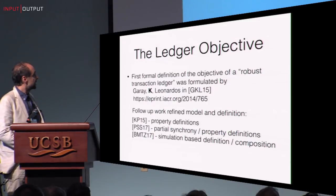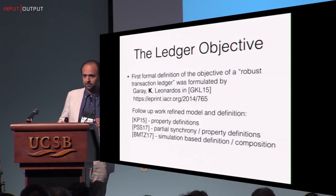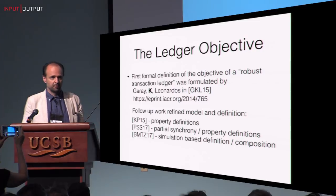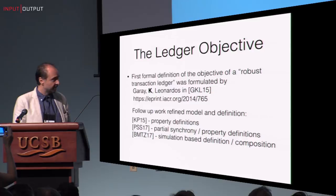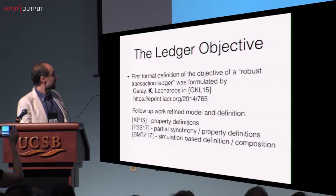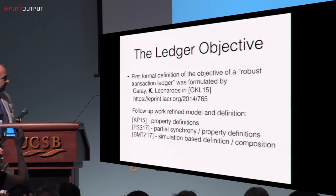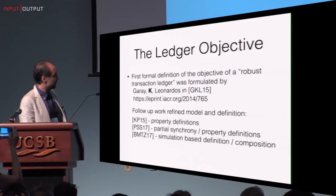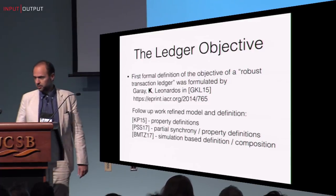You heard in this session a lot about the ledger objective. The goal is to construct a protocol that realizes this robust transaction ledger. This was the objective of a paper by Juan Caray, myself, and Leonardo in GKL. We formalized this definition as an objective, and this gave us follow-up work to refine the model and definition, some of which we also heard in this session, which now we can say we have finally a simulation-based definition which is composable.